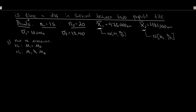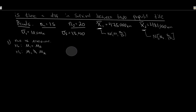Alternatively, if the question was phrased differently — say, is there evidence that brand two lasts longer? — I would phrase it as: alternative, mu one is less than mu two; null, mu one is greater than or equal to mu two. So everything in our two-sample world is population parameter to population parameter. That's what we're taking a look at in this case.